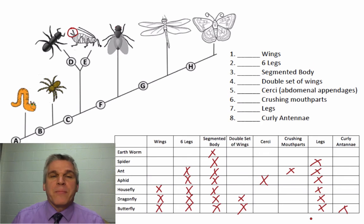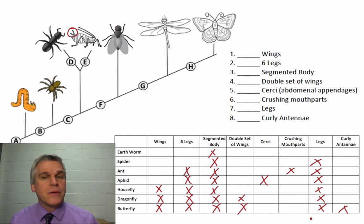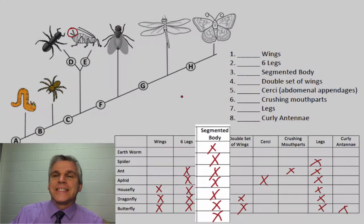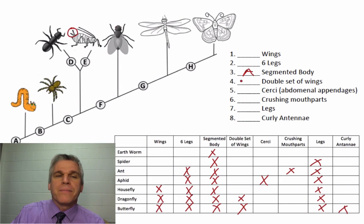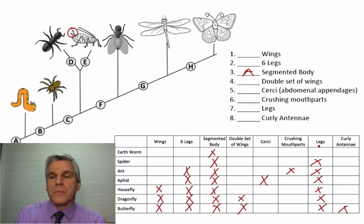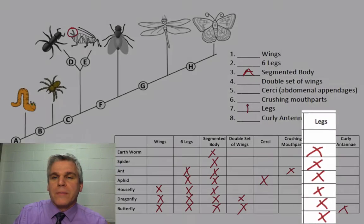So this is happening before all these animals — it is something that all the animals have in common. Looking at our table, that would be the segmented body. So I'm going to label that A. Then B is going to be what all these animals have in common except for the earthworm, and that would be legs. So legs we'll label as B.